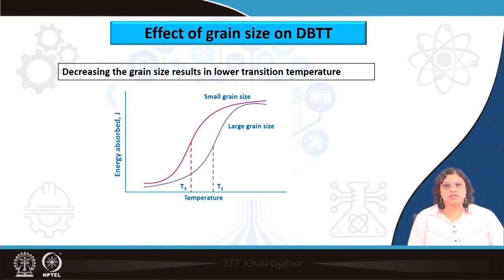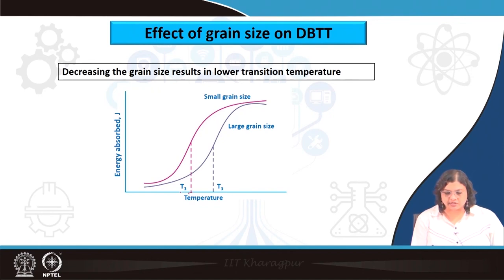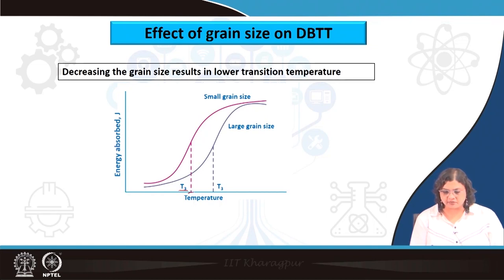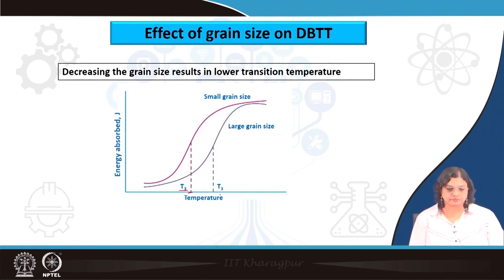Where we stopped in the last lecture, we were discussing about the influence of grain size. We have seen that finer grain size or refined grains give us lower ductile to brittle transition temperature. As you can see based on the T3 DBTT mode, for the finer grain size the value of DBTT is lesser than that for the larger grain size. By controlling the grain size we can in turn control the DBTT.